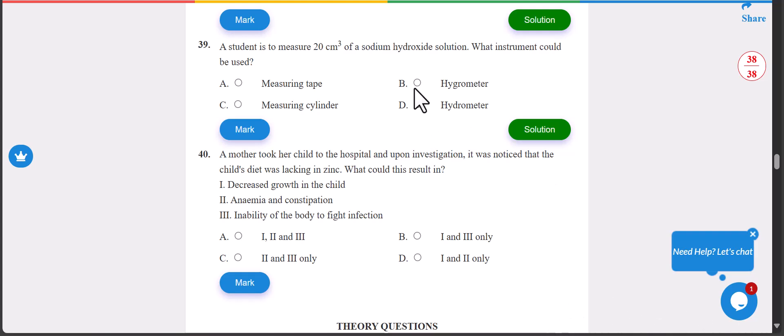Number 39: a student is to measure 20 centimeters of a sodium hydroxide solution. What instrument could be used? That's going to be C, measuring cylinder.